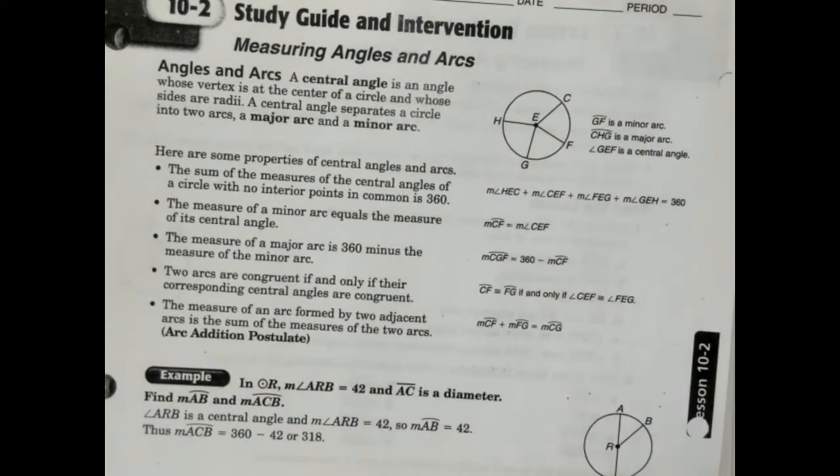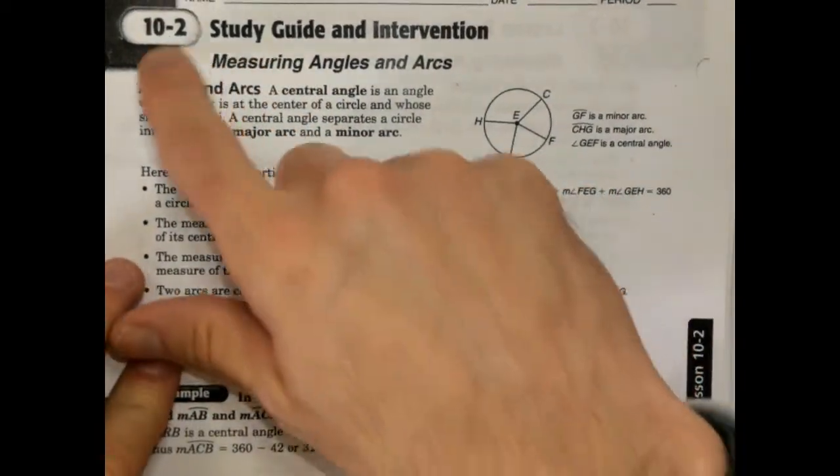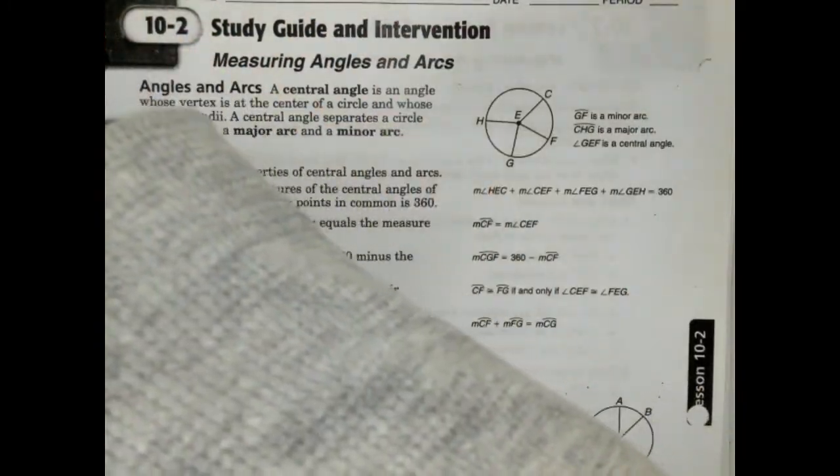Hey everybody, so here is going to be a review of the study guide intervention for, it should be 8-2, I don't know what it says, 10-2, it's the older unit numbers.